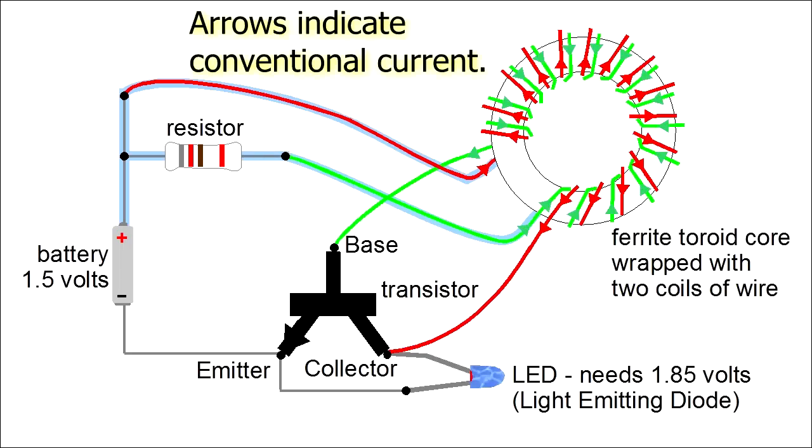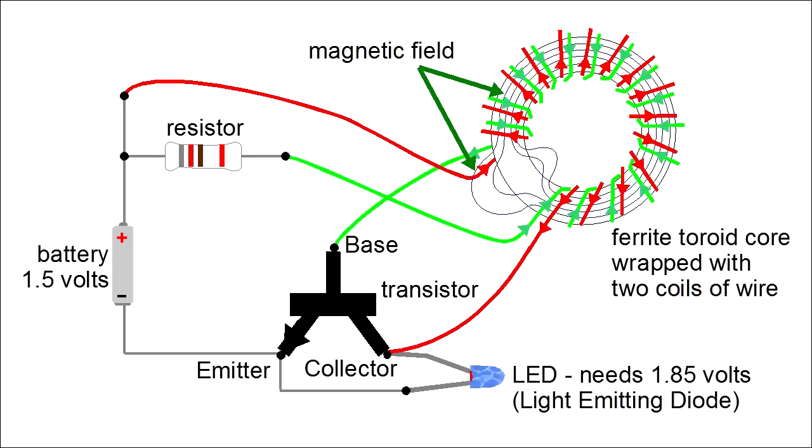Note that I'm talking about conventional current here, not electron current. When you run an electrical current through a coil like this, that creates a magnetic field around the coil. Notice that wherever the coil is around the ferrite core, the magnetic field is entirely inside the coil. Both coils create magnetic fields, but the one created by the red coil is the strongest one, so we'll pay attention to it only.